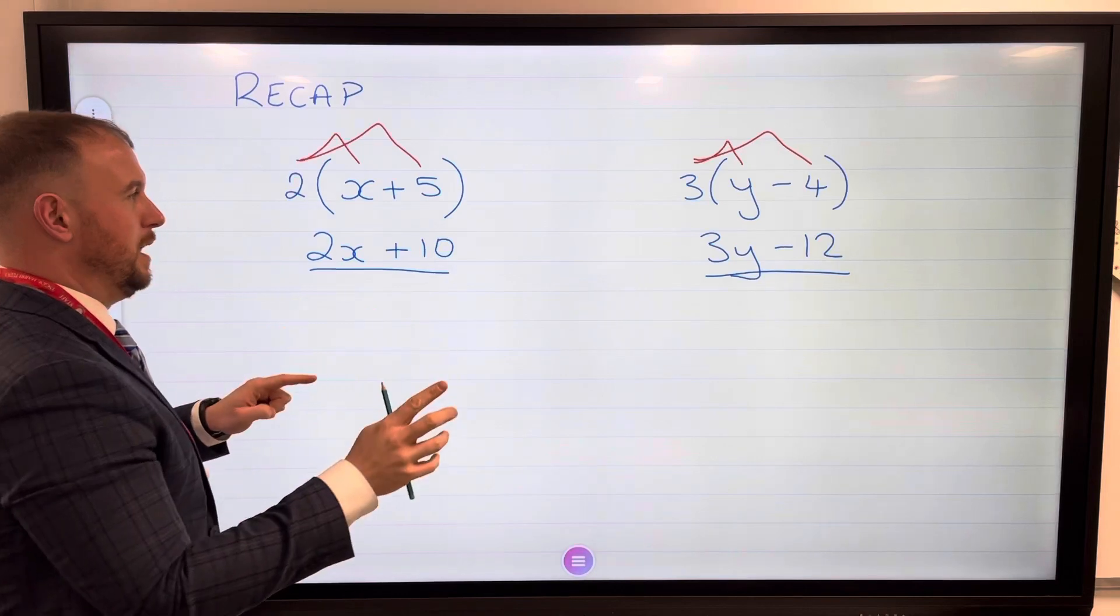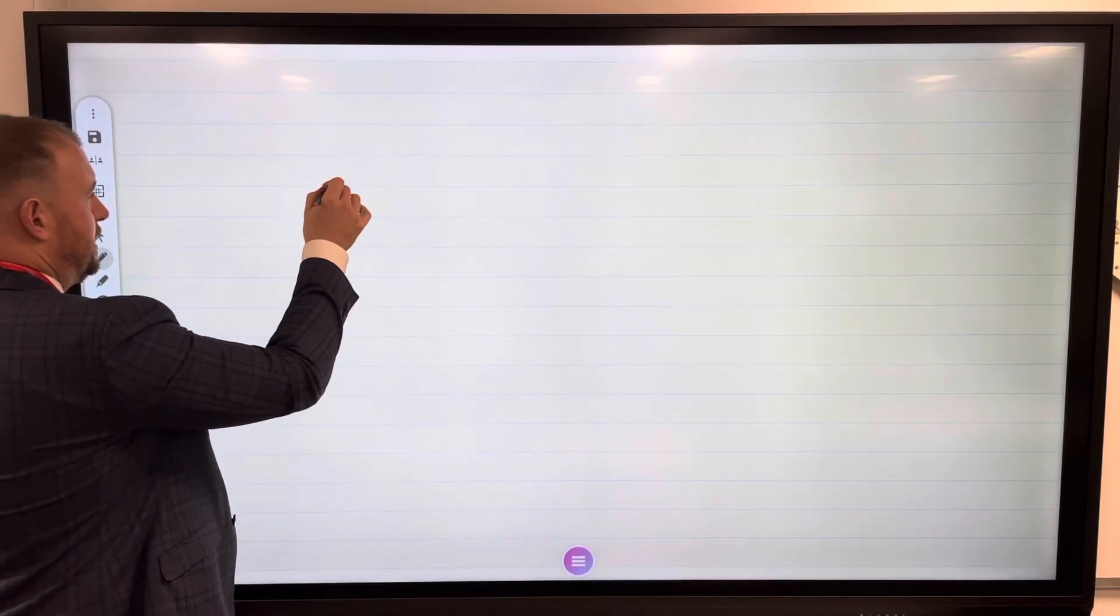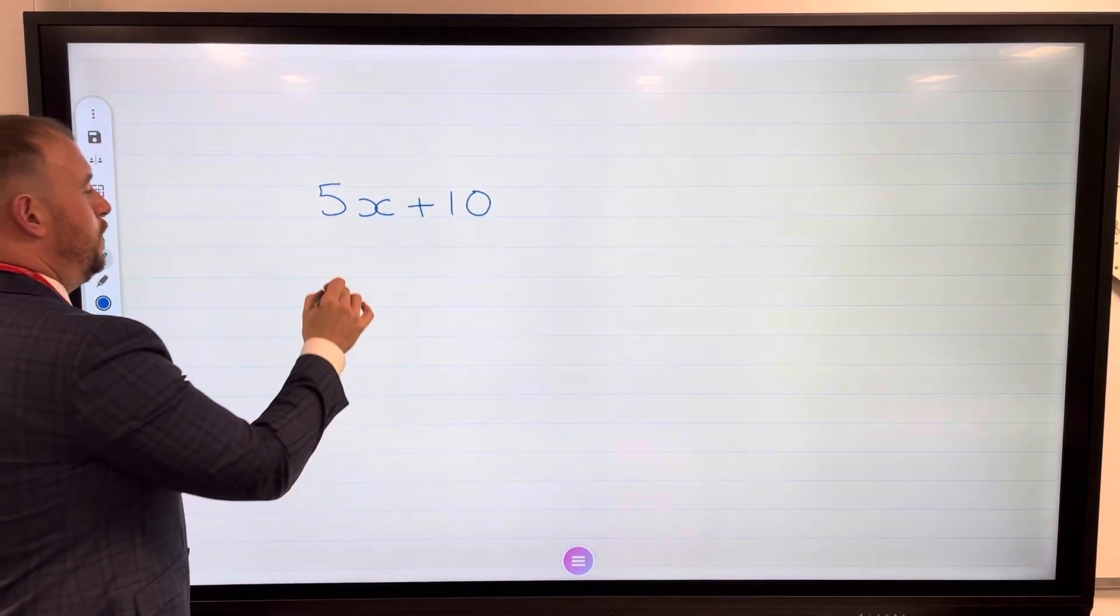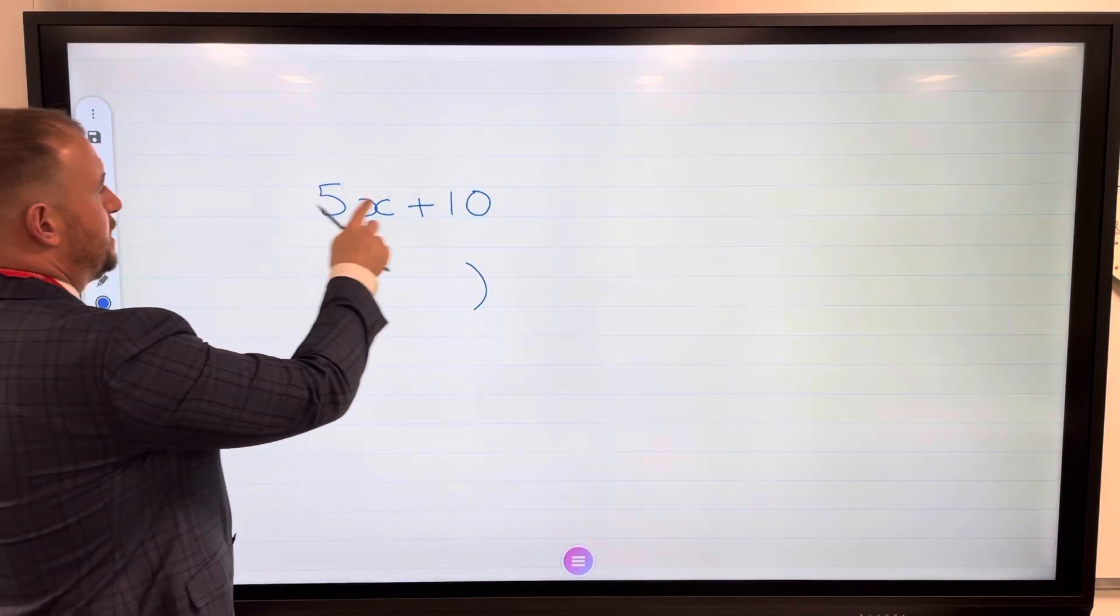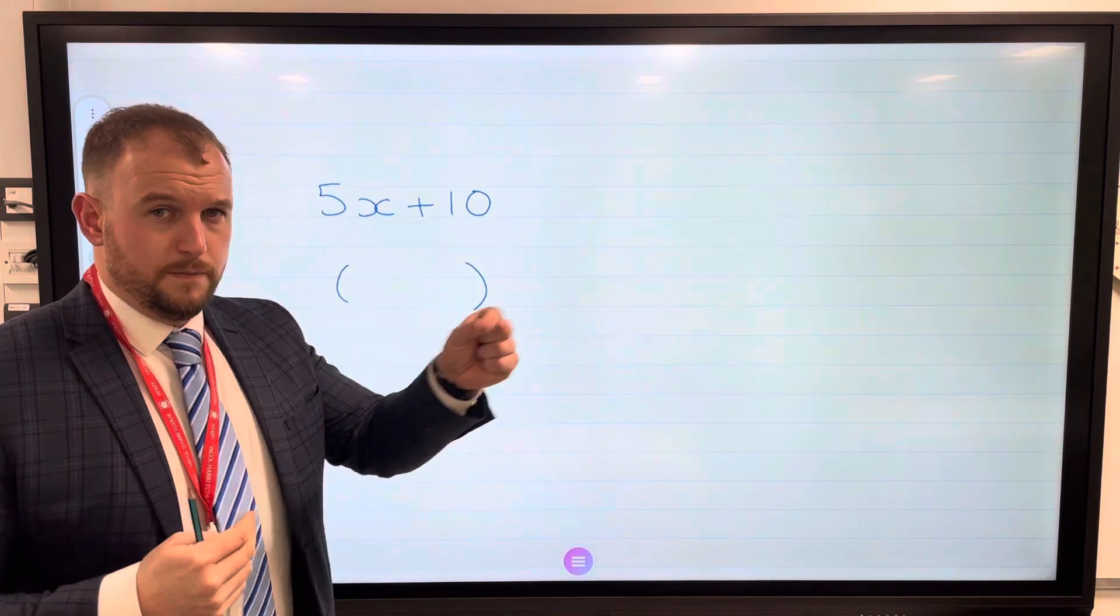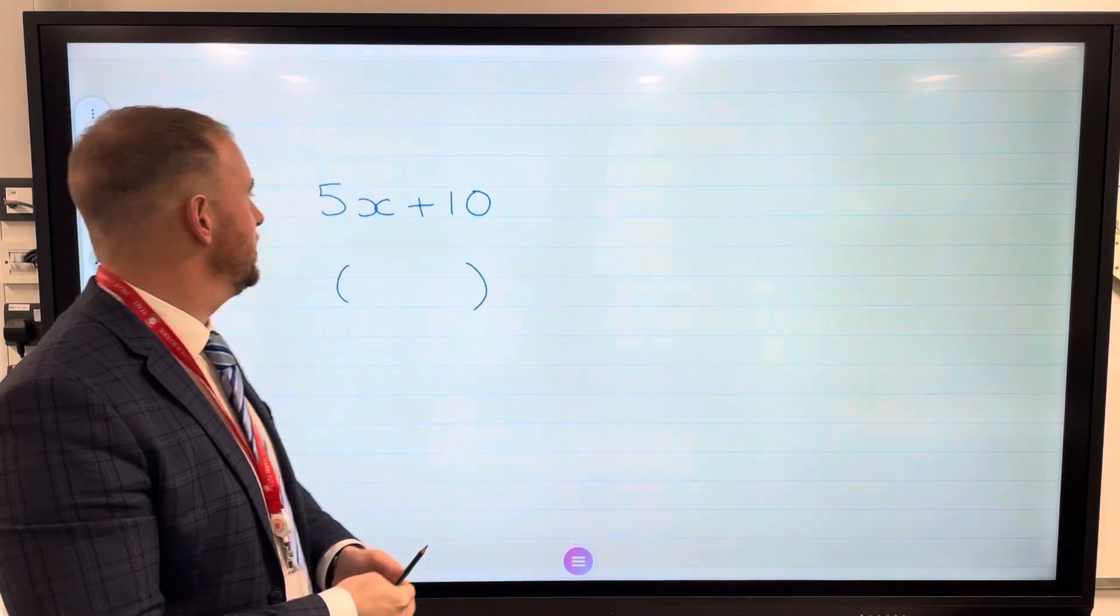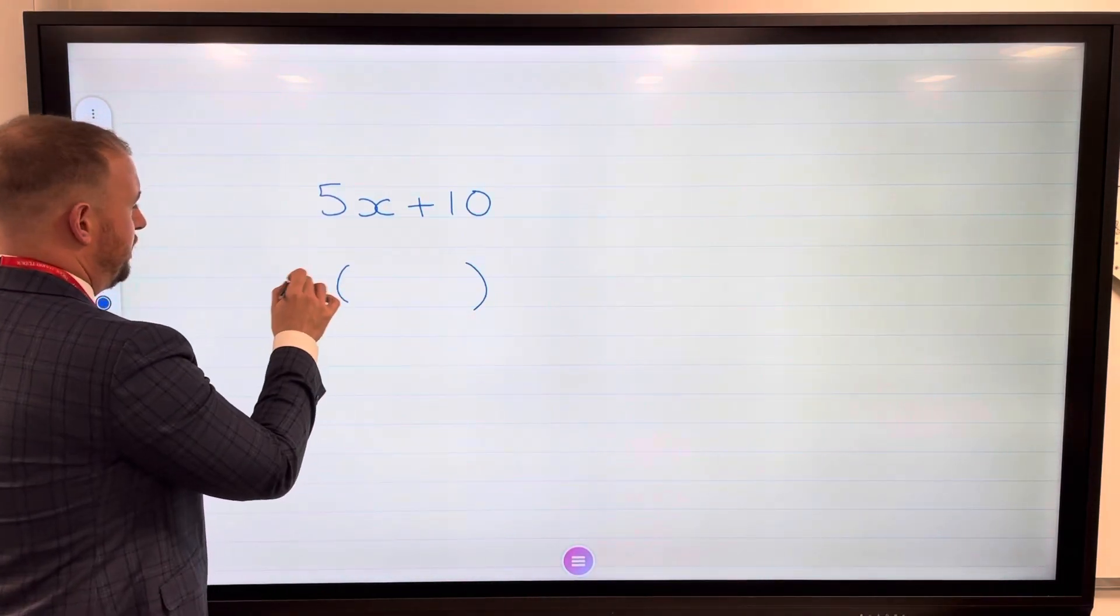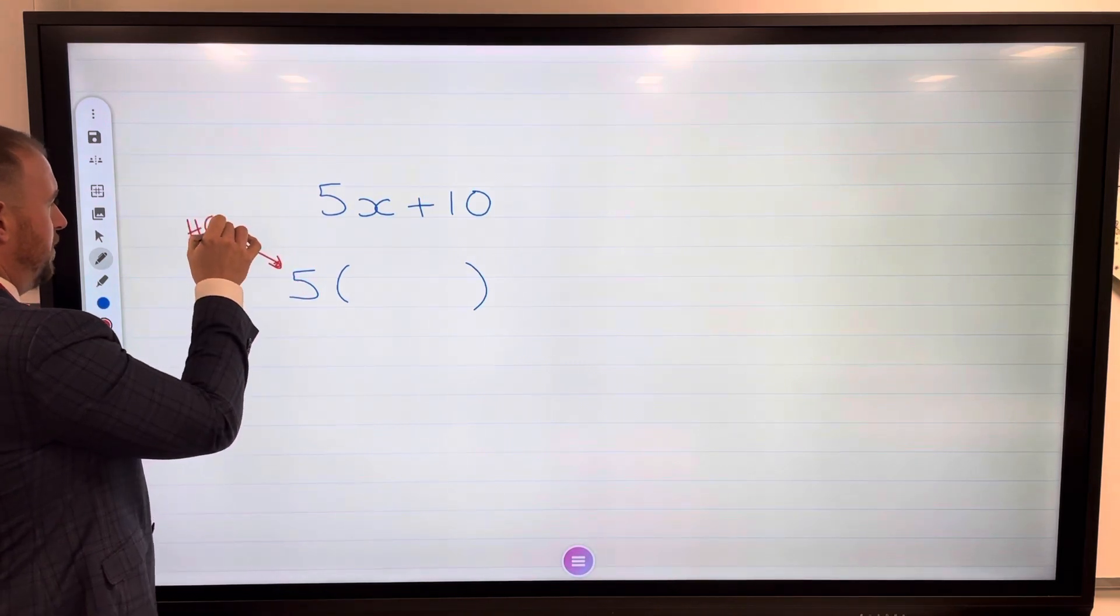If I then had an expression like 5x plus 10, we need to put it into a bracket. Well, there are a couple of numbers that go into both of those, but I want to pick the biggest, the highest common factor. The highest common factor of 5x and 10 is 5. So that 5 there is our highest common factor.